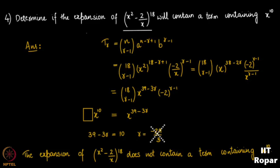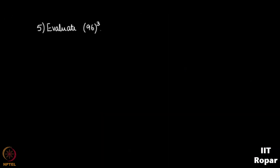Next question: evaluate 96³. It is easy on a calculator, but let us use binomial theorem. We write 96 as 100 − 4, so 96³ = (100 − 4)³. This is the key insight and now it becomes very simple by applying binomial theorem.